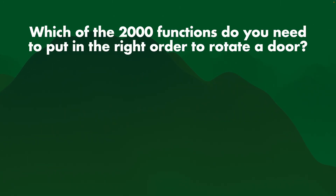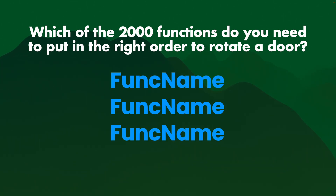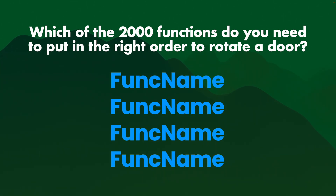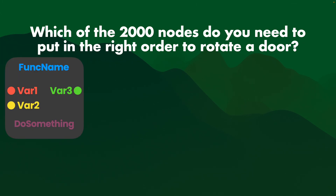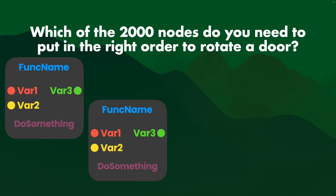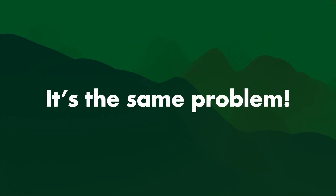Which of the 2,000 functions do you need to put in the right order to rotate a door? You need to find function name, another function name, another function name, another function name, put them in the right order, and then you rotate a door. Now, which of the 2,000 nodes do you need to rotate a door? You still need to find the right node, and the right node, and the right node. It's the same problem.